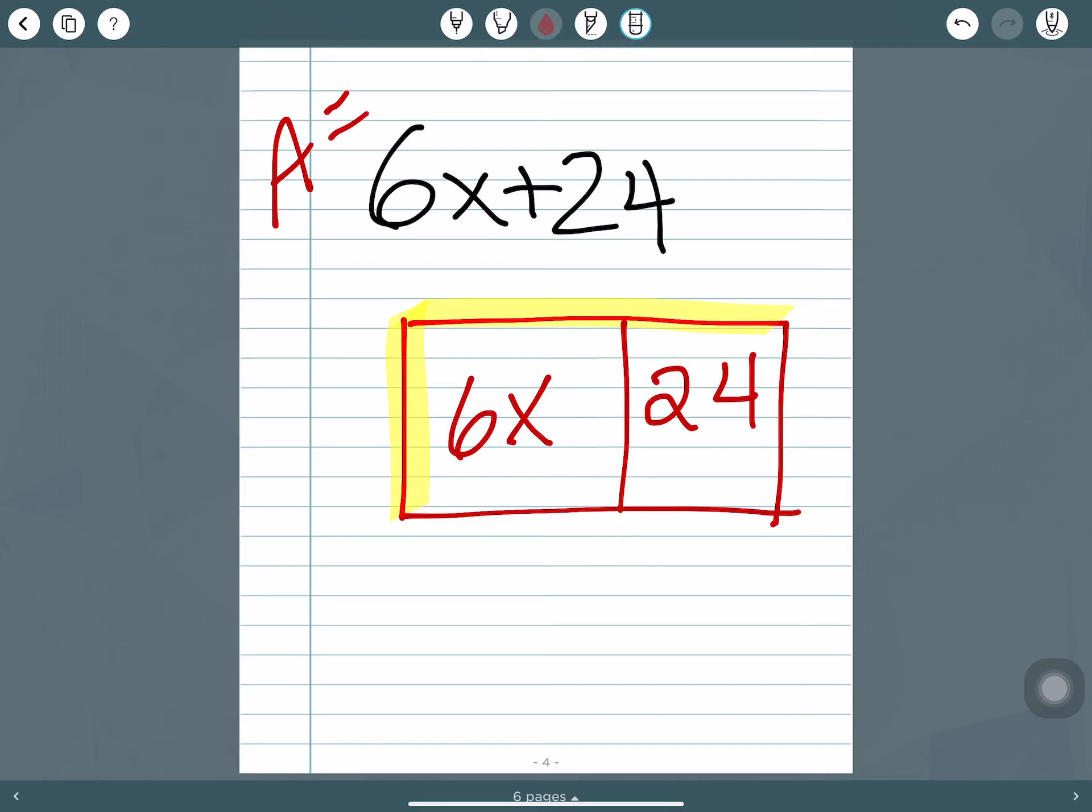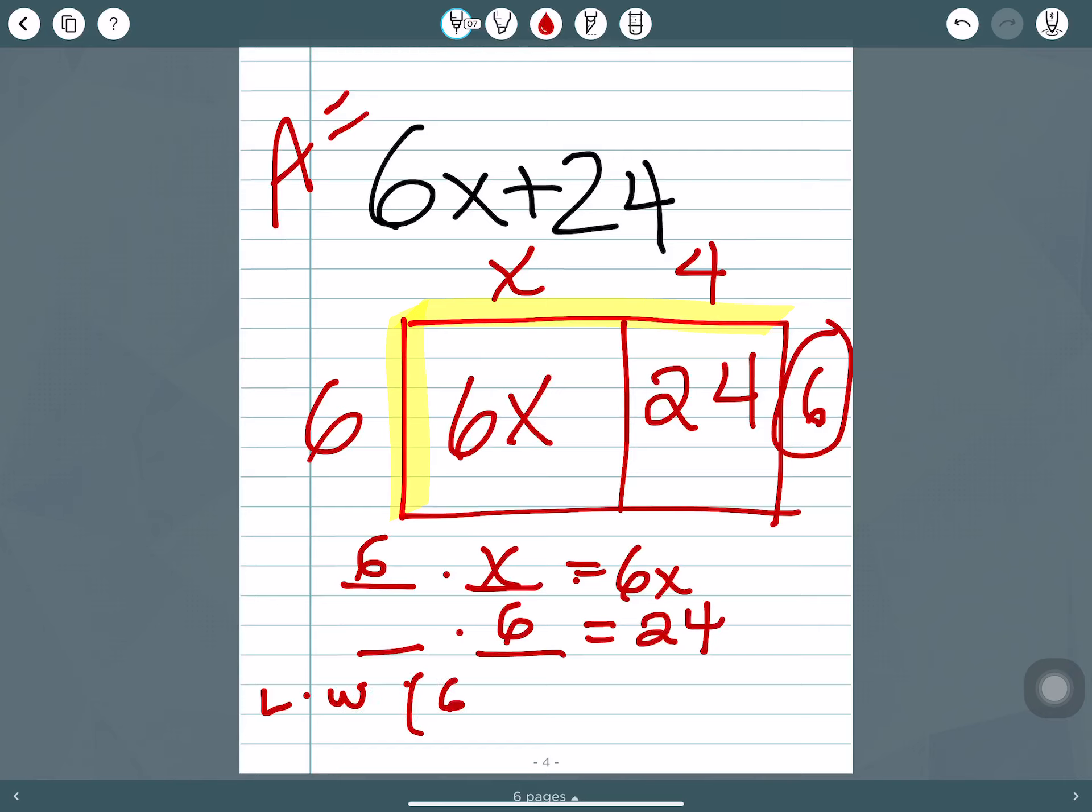So what you want to do is figure out what times what equals 6 times x. We do have some options, but I'm going to try 6 and x. So one side is x, the other side is 6. And then what times what gives me 24? Well, I know one side has to be 6, and then that would have to be 4. So the length times the width would be 6 times x plus 4. I actually don't need these parentheses. Here's the final answer.